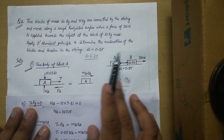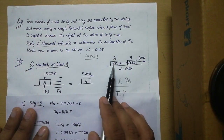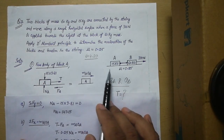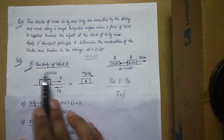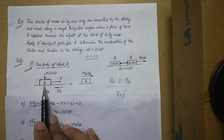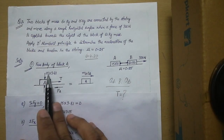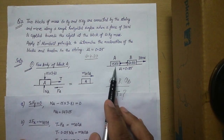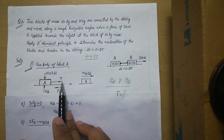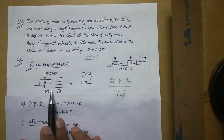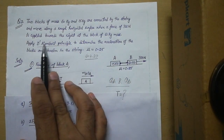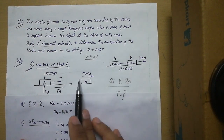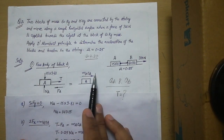First, we need to draw the free body diagrams of the two blocks. For the free body of block A resting on the surface: the first force is its weight (15 × 9.81 downward), which produces a normal pressure NA upward. Another force acting on block A is the tension T in the string acting towards the right. Since friction is mentioned and both blocks move towards the right, friction acts in the opposite direction. This system of forces is responsible for the acceleration of block A, represented as MA·AA.